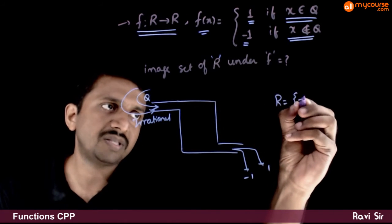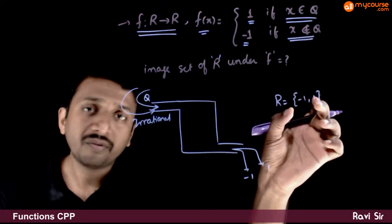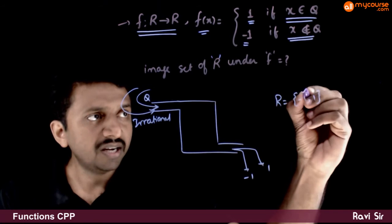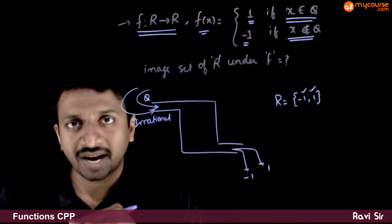The range is equal to set {-1, 1}. Flower brackets means set minus 1 comma 1, that is, you have only two elements, minus 1 and 1.